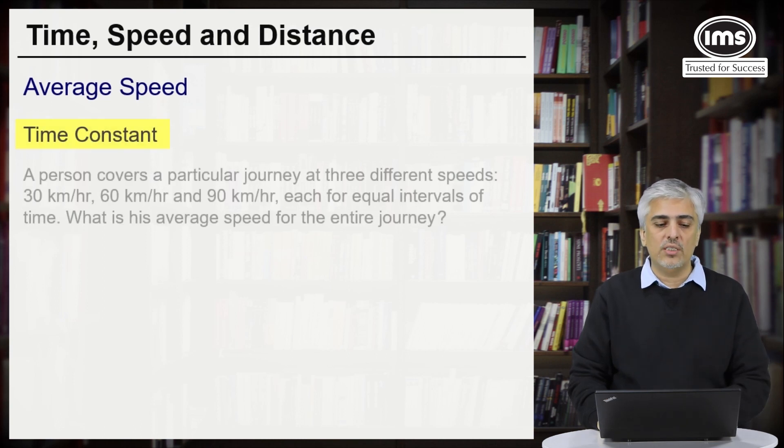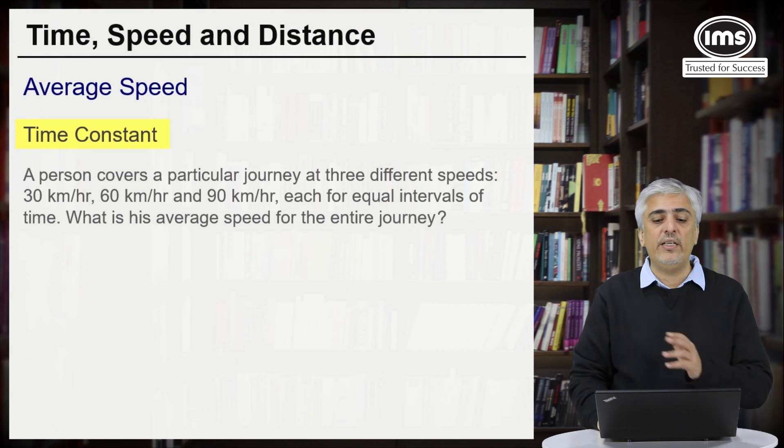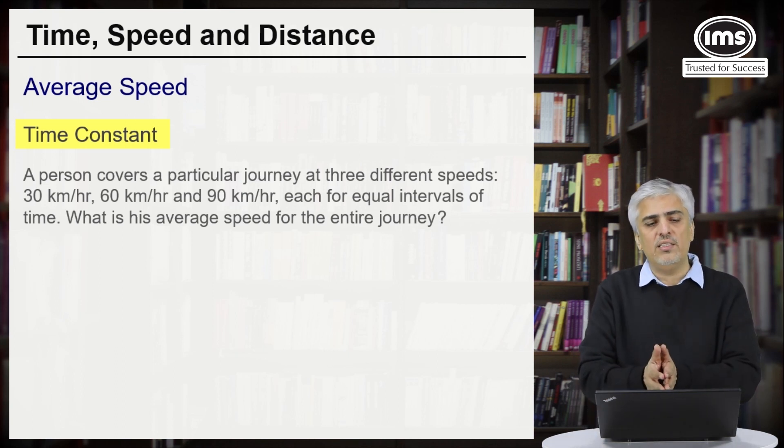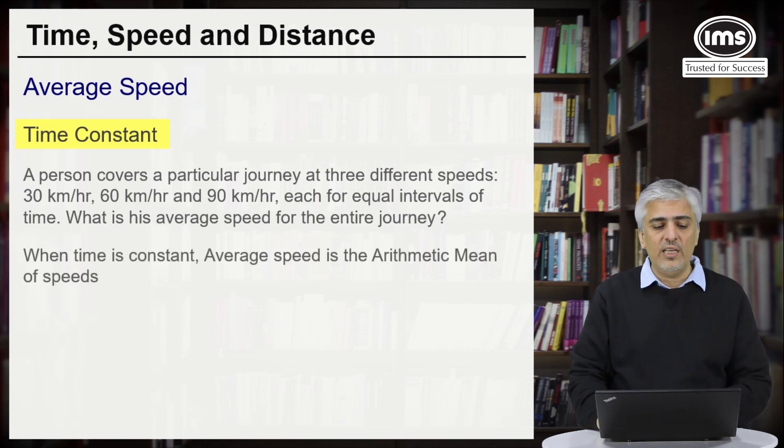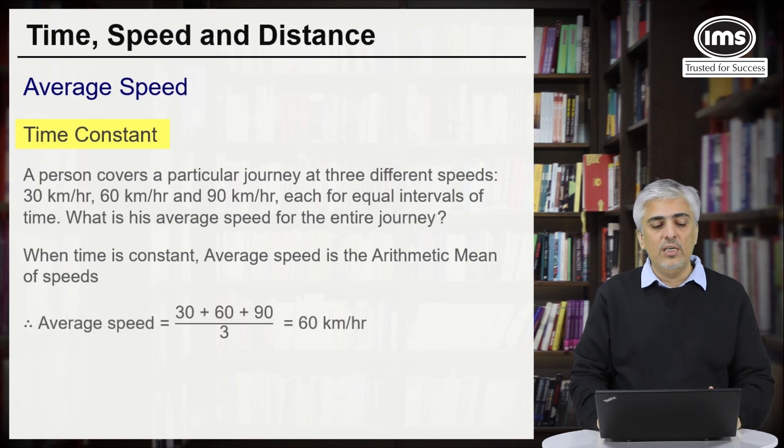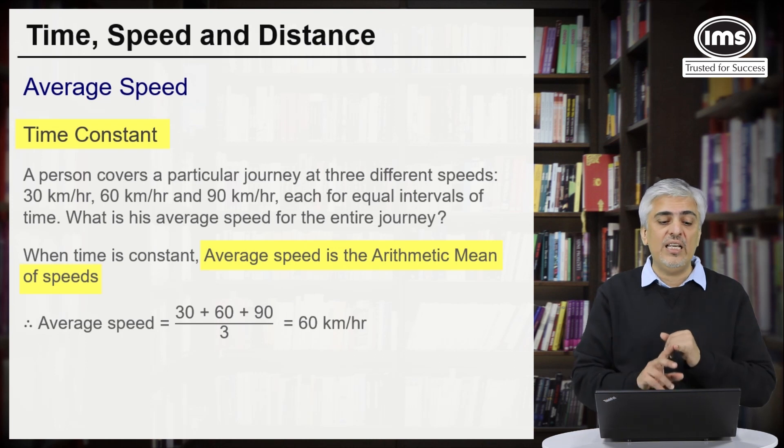This time the time is constant. A person covers a particular journey at three different speeds 30, 60 and 90 each for equal interval of time, which means he's traveling say for one hour at 30, for one more hour at 60 and for third hour at 90. What is his average speed? What is the property? Whenever time is constant, average speed is the arithmetic mean of the speeds. That's the rule you need to remember. So average speed in that case will become directly 30 plus 60 plus 90 upon 3, which will be 60 kilometers per hour. The rule is average speed is the arithmetic mean of the speeds.